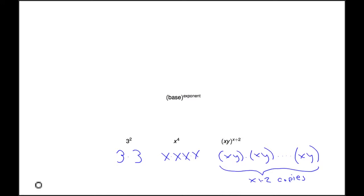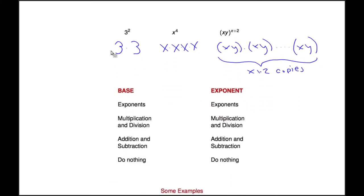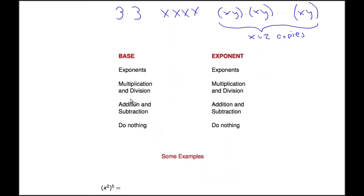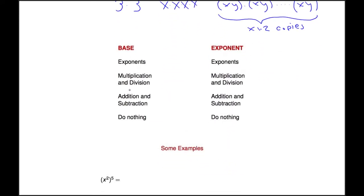But what you do with the exponents when you're trying to combine them can be sometimes tricky, so that's what we're going to be talking about. So let's look at some shorthand rules. Here we have a base, and here we have an exponent. You can see I've got a hierarchy where the top is exponents, then comes multiplication and division, then addition and subtraction, then do nothing.